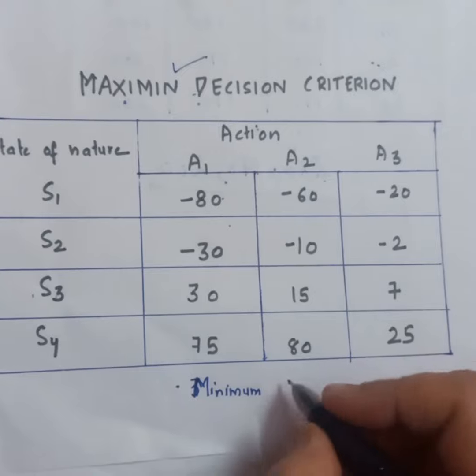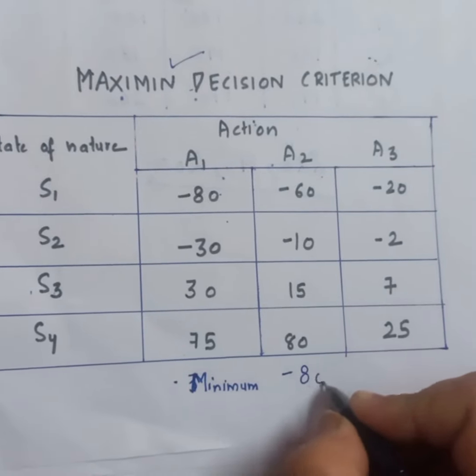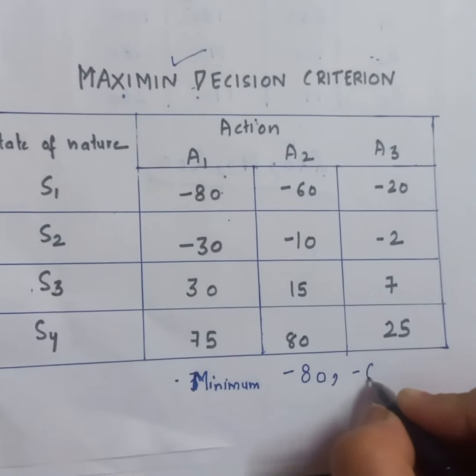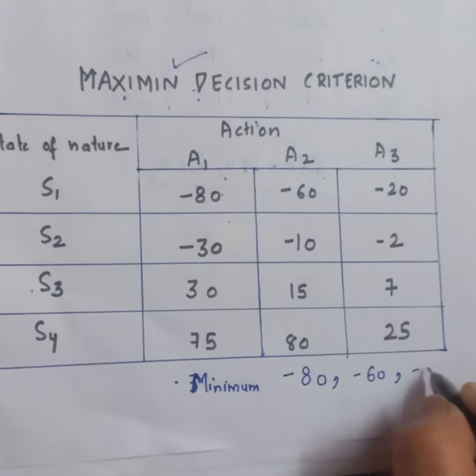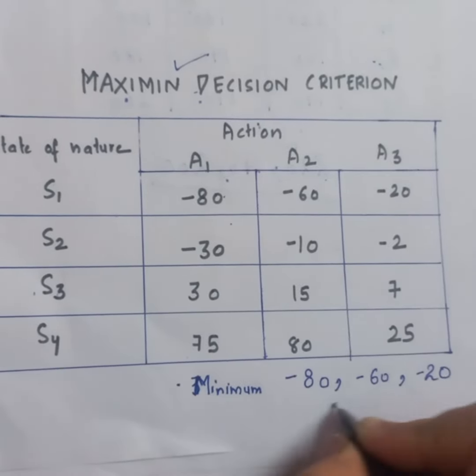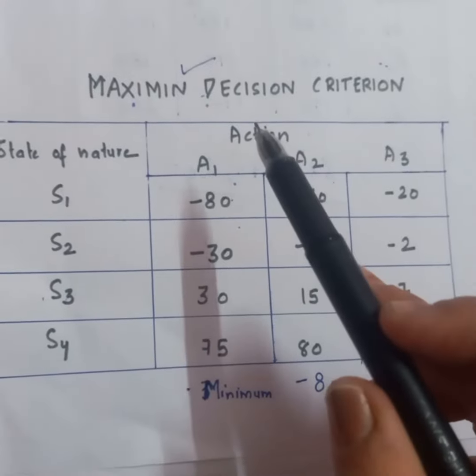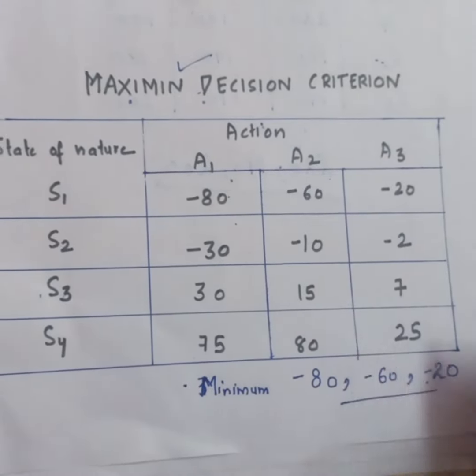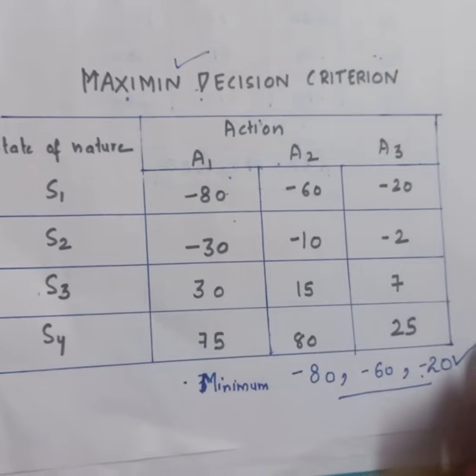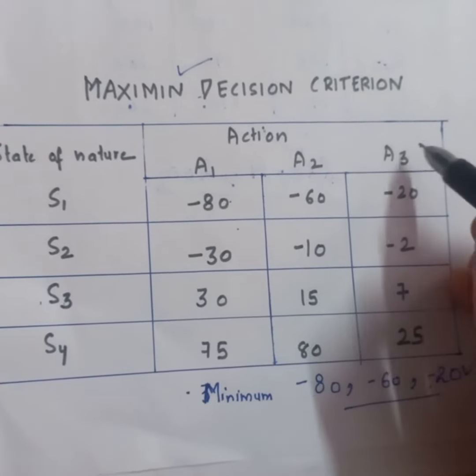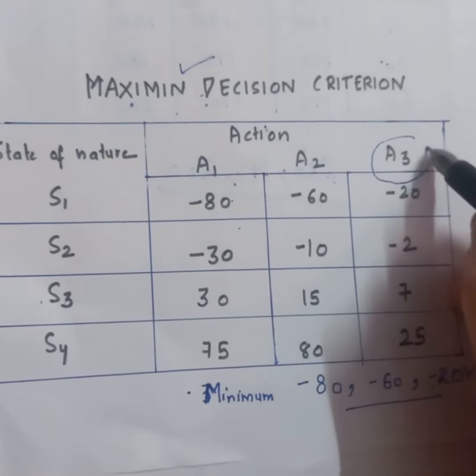In A1, we have minus 80. In A2, we have minus 60. And in A3, we have minus 20. These are the minimum values we have. Among these minimum values, the maximum value is minus 20. So, which alternative course of action will be selected? A3 will be selected.